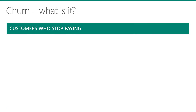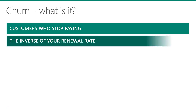Simply put, the churn rate is the percentage of clients that sign up for a subscription and that stop paying, for whatever reason — whether they went to a competitive product or simply didn't find a compelling need for this type of solution. There are a number of ways of measuring churn, but in its most basic form, it is the inverse of your renewal rate. If 97% of your clients renew their subscriptions, then the churn rate is 3%.